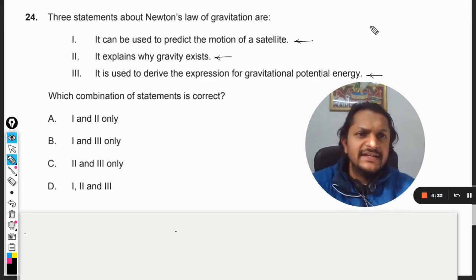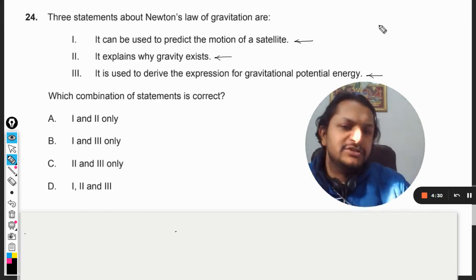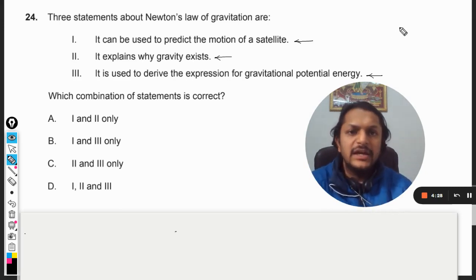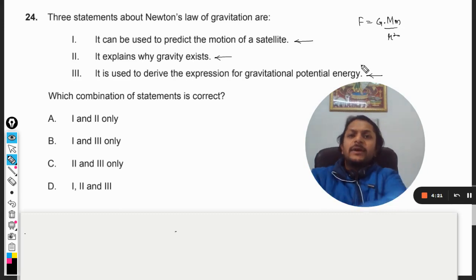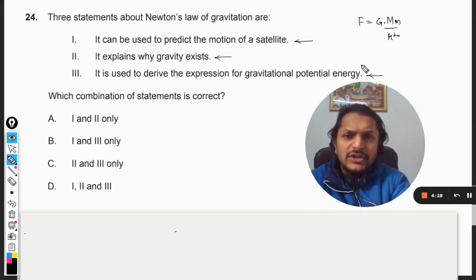So first of all, what is Newton's law of gravitation? Newton's law of gravitation is given as F is equal to capital G into the product of masses divided by the square of the distance between them.